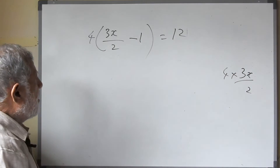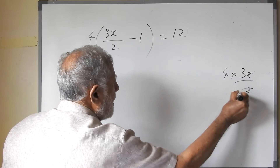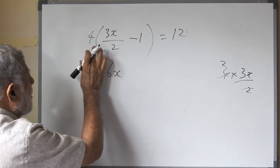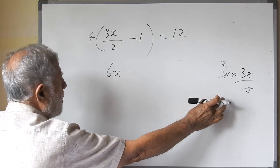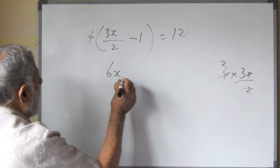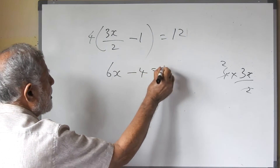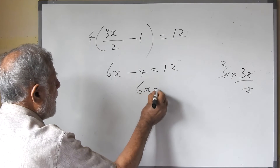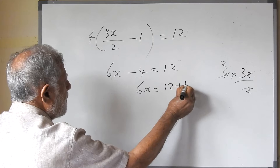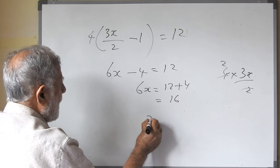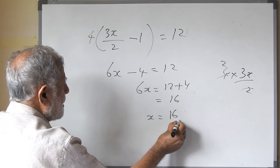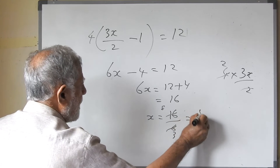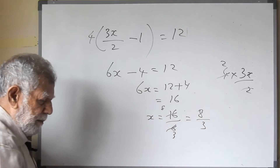So 4 into 3x upon 2 — write it out and multiply. Here 2 and 4 cancel to give 2, so that equals 6x. Then minus 4 into 1 equals 4. So 6x minus 4 equals 12. Therefore 6x equals 12 plus 4, that is equal to 16. So x is equal to 16 upon 6, cancel by 2, that is equal to 8 upon 3.